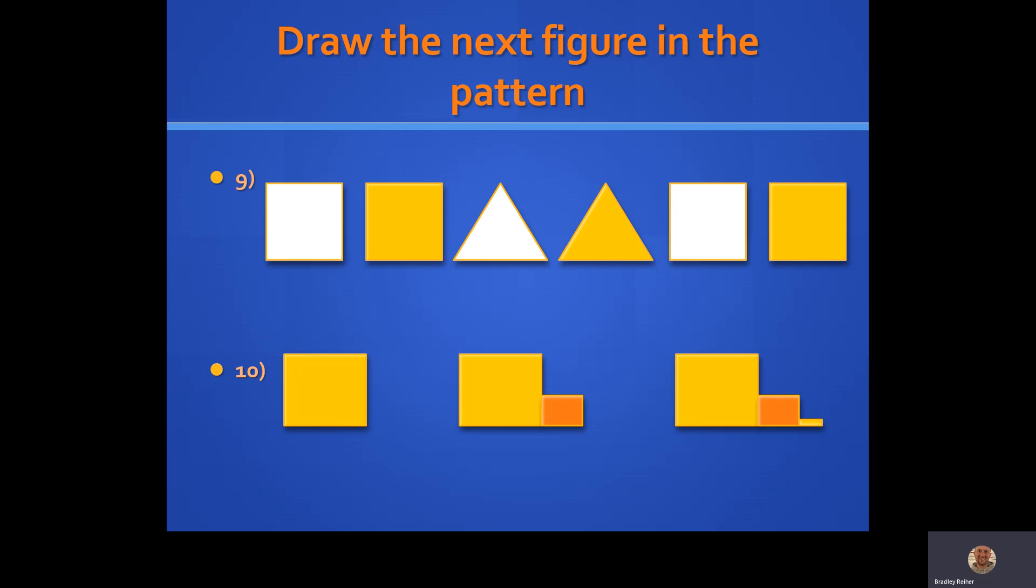Okay, let's take a look at number 10 real quick here. Looks like we have a yellow square, and then in the next figure, we have the same yellow square with maybe an orange rectangle beside it. Then we keep that same figure for the third part of this, and we have an extra yellow rectangle at the end.